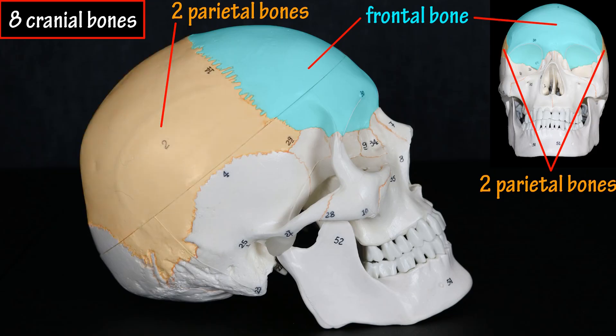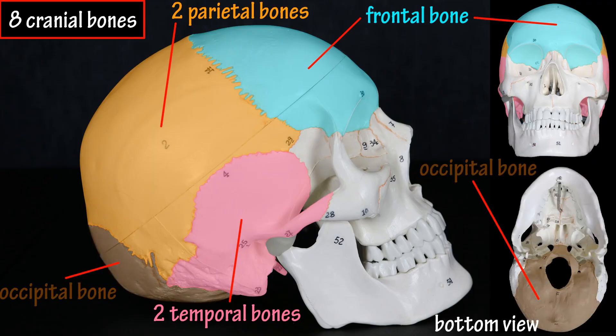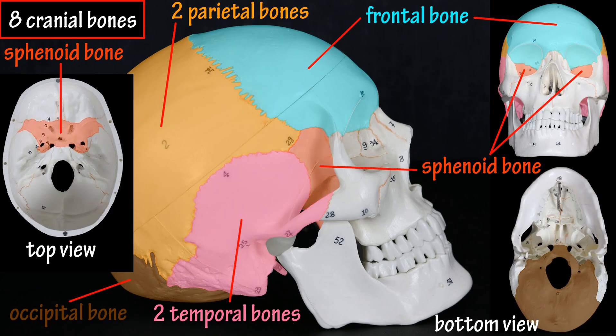Two parietal bones, located on the sides of the top of the skull. Two temporal bones, located on the sides of the skull, underneath the parietal bones. An occipital bone, located in the back of the skull. A sphenoid bone, that resembles a bat with extended wings, is located in the inner part of the skull, and extends into the outer part of the eye sockets.